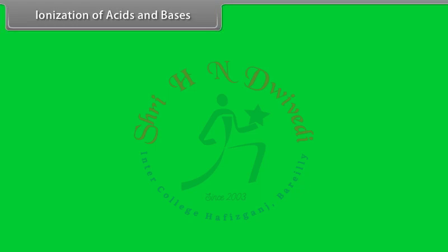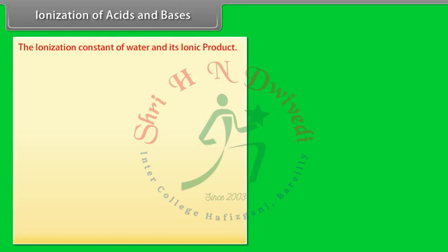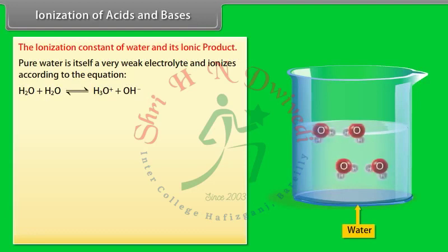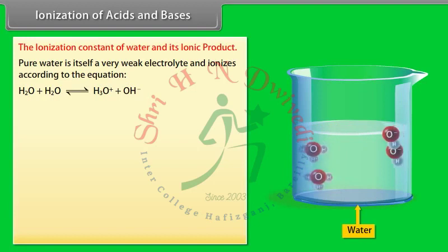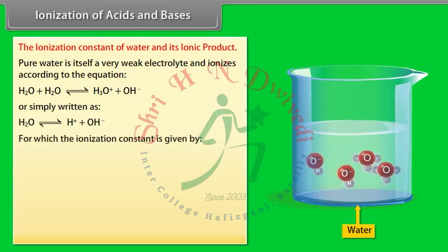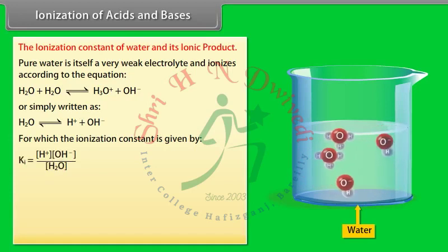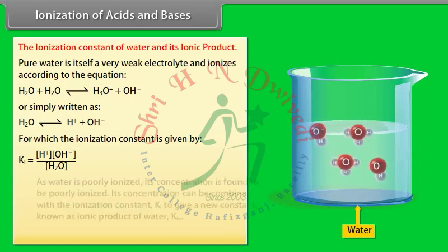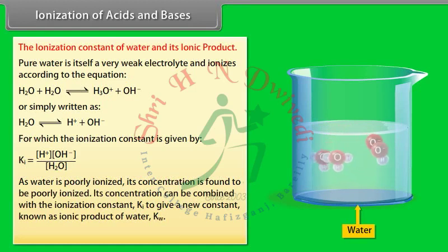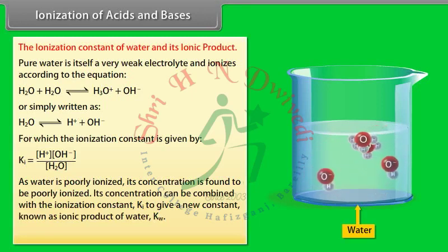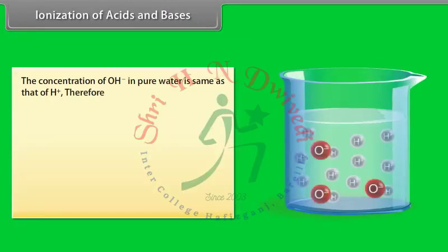Pure water itself is a very weak electrolyte. Its ionization constant Ki = [H⁺][OH⁻] / [H₂O]. Since water is poorly ionized, its concentration can be combined with Ki to give a new constant known as the ionic product of water, Kw = [H⁺][OH⁻]. The concentration of OH⁻ in pure water equals that of H⁺, therefore Kw = [H⁺]².